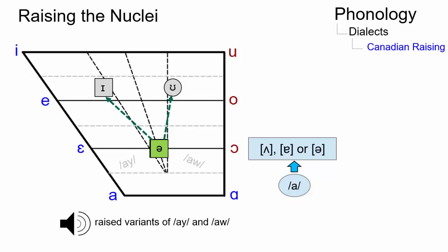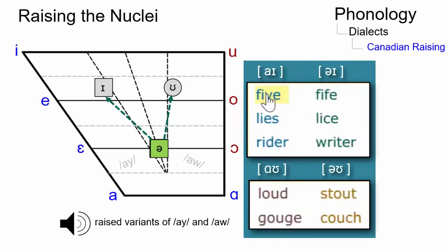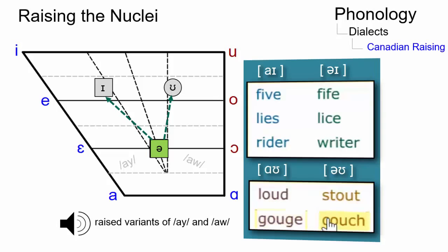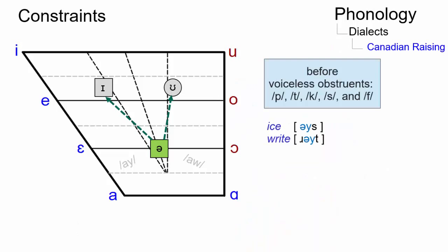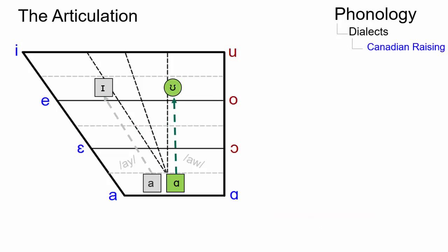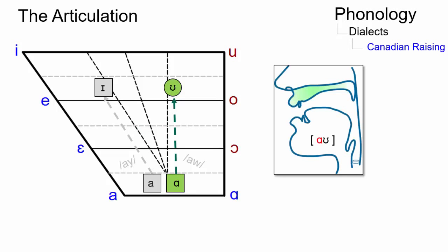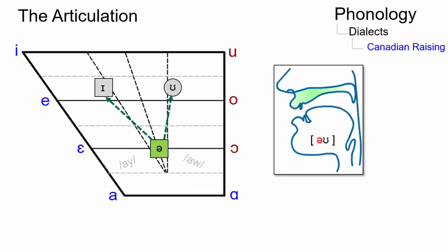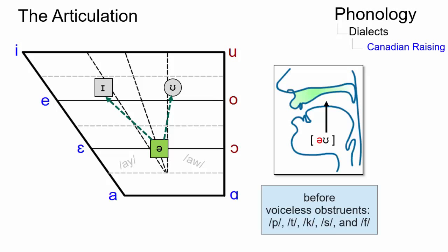Let's listen to the raised variants. Canadian raising occurs before voiceless obstruents. Vowels before voiced obstruents are usually not raised. The more common pronunciation is articulated with the tongue in a low position, whereas with Canadian raising the tongue is raised to a mid-position when the vowel precedes voiceless consonants.